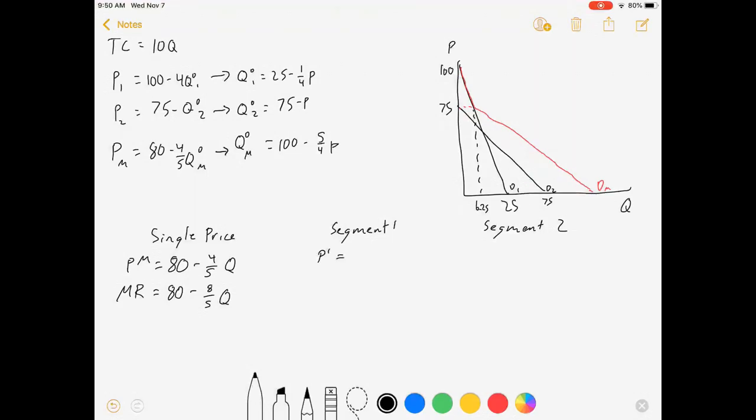For segment one, we've got P1 equals 100 minus 4Q, which means marginal revenue for segment one equals 100 minus double the slope, 8Q.